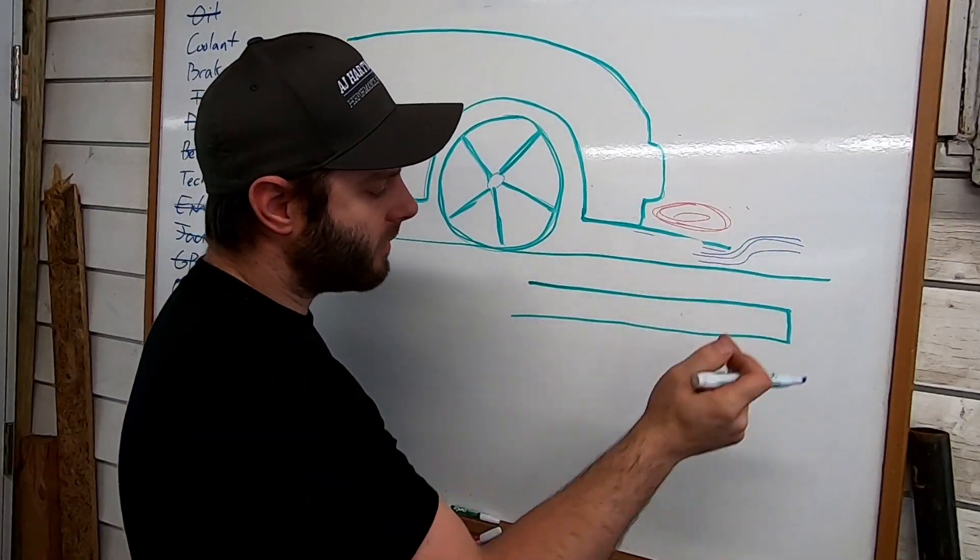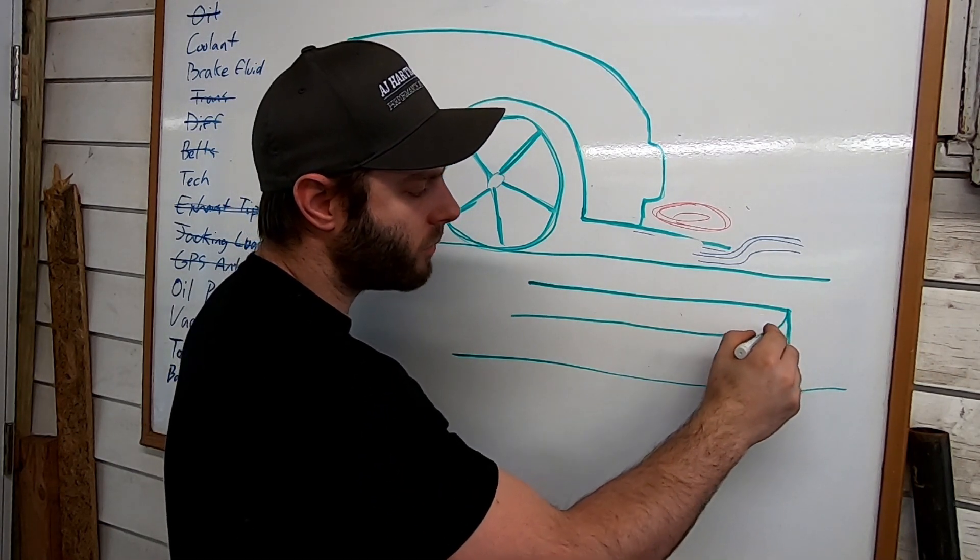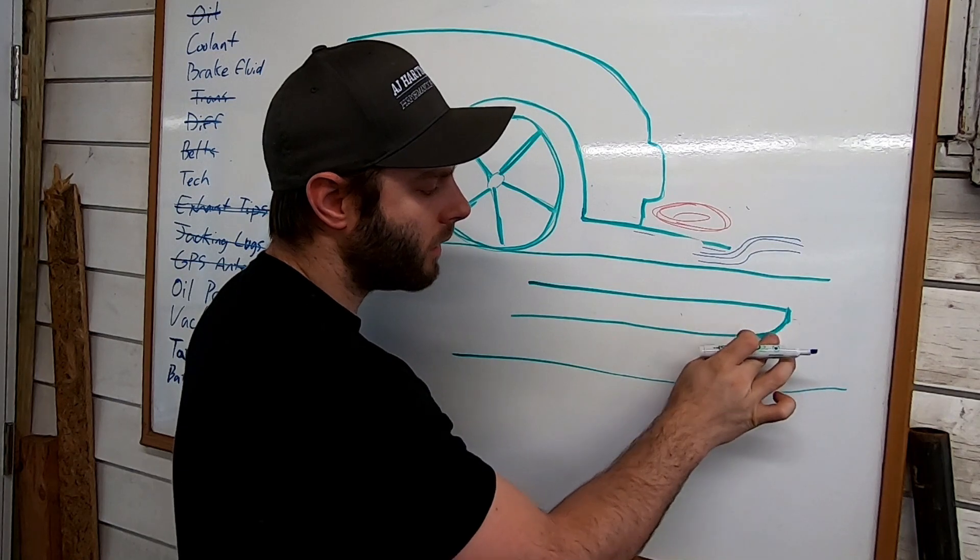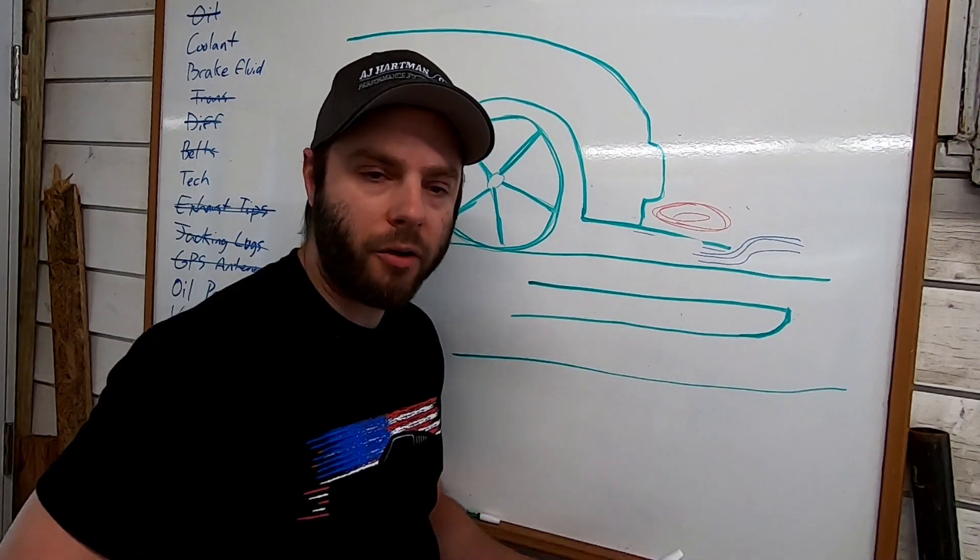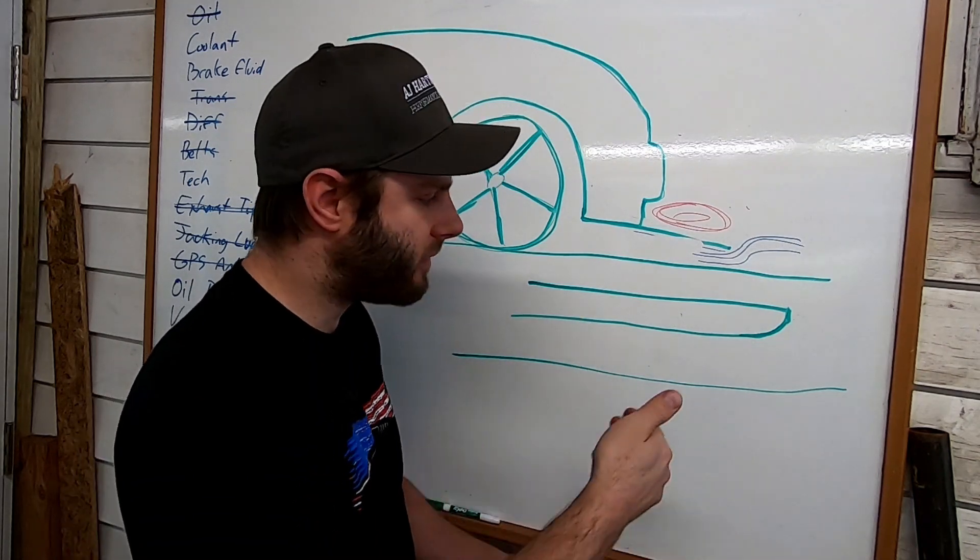I always recommend plywood if you're trying to do a cheap splitter. This would be the top of the splitter, ground would be right about here. If you can, you almost want to radius the front edge like this. You could use a router bit or just take your time with a grinder or a sander or something.